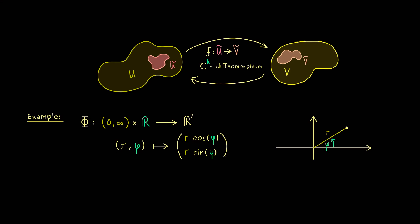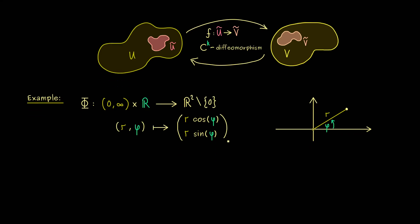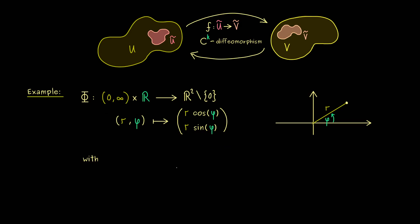We immediately recognize this is not a bijective map because we don't hit the origin at all — we would hit it if we included 0 on the left-hand side, but then we would not have an open set. However, this we could easily repair by excluding the origin on the right-hand side. But then we should still ask: is this a well-defined C^1 diffeomorphism? To see that, we can calculate the Jacobian for the map Phi. This is not complicated because we just need the derivatives of cosine and sine, and this gives us a 2×2 matrix.